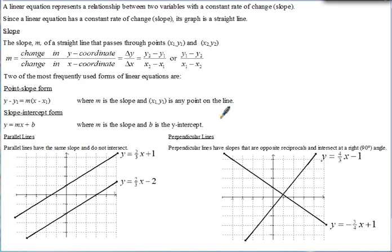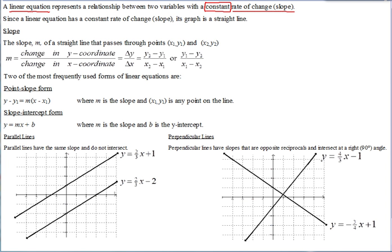These are the notes for AP Calculus on the topic of linear equations. A linear equation represents a relationship between two variables with a constant rate of change, which we refer to as slope. This is a term we'll be coming back to a lot throughout the year in calculus. Since a linear equation has a constant rate of change of slope, that causes its graph to be a straight line.